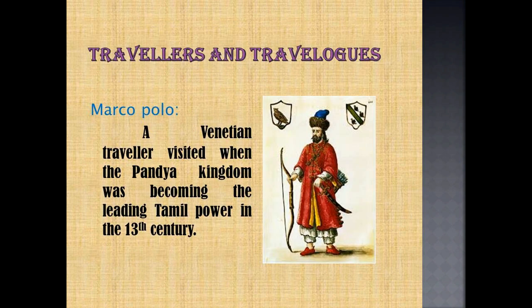Many travellers who visited India during the medieval period contributed accounts of their journeys. Marco Polo, a Venetian traveller, visited when the Pandya kingdom was becoming the leading Tamil power in the 13th century. Marco Polo was twice in Kayal, which was a port city — now called Thoothukudi district of Tamil Nadu. It was full of ships from Arabia and China, and Marco Polo tells us that he himself came by ship from China.